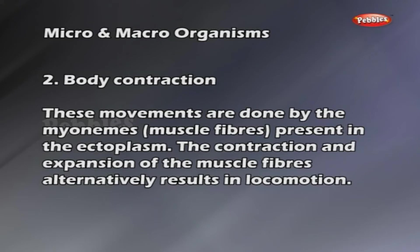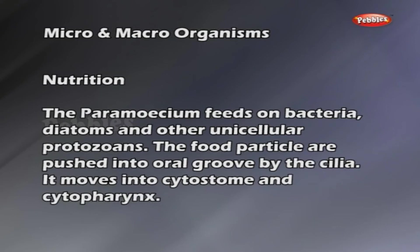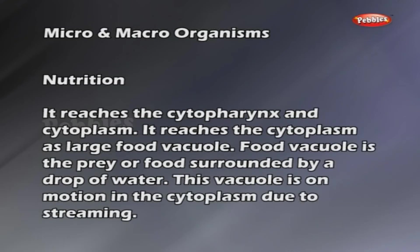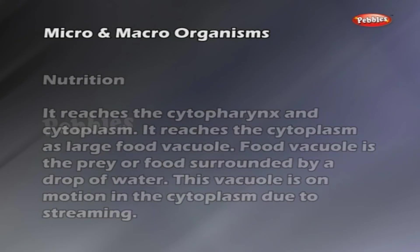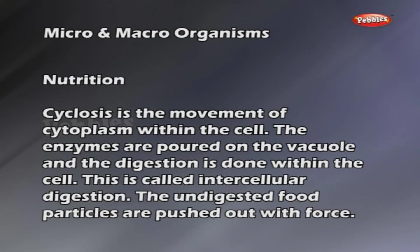These movements are done by the myonemes — muscle fibers present in the ectoplasm. The contraction and expansion of muscle fibers alternatively results in locomotion. Nutrition: Paramecium feeds on bacteria, diatoms and other unicellular protozoans. Food particles are pushed into the oral groove by cilia. It moves into the cytostome and cytopharynx, then reaches the cytoplasm as a large food vacuole. The food vacuole is the prey surrounded by a drop of water. Cyclosis is the movement of cytoplasm within the cell. Enzymes are poured on the vacuole and digestion is done within the cell — this is called intracellular digestion. Undigested food particles are pushed out with force.